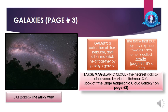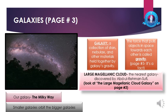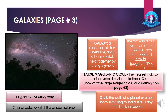Smaller galaxies orbit the bigger galaxies. All objects which are smaller in size orbit the bigger ones because bigger objects have a stronger center of gravity. Orbit is an imaginary path — the path of a planet or other heavenly body traveling around a star or any other body in space is known as the orbit. Like planets orbit the sun on their specific paths — those paths are known as orbits.